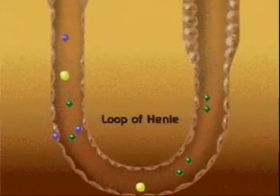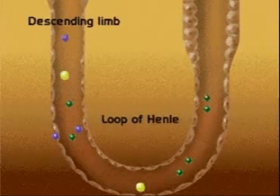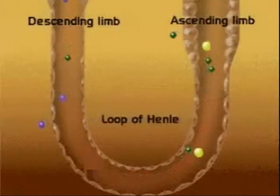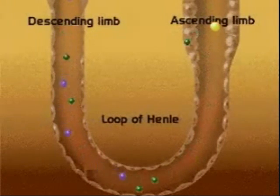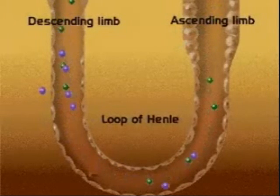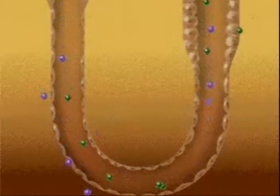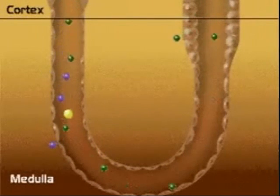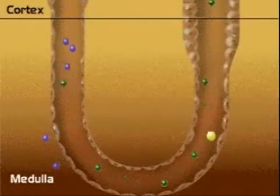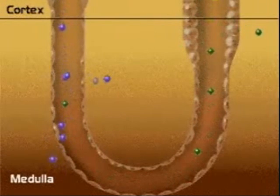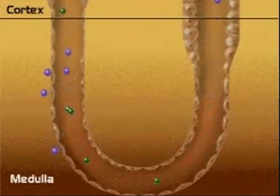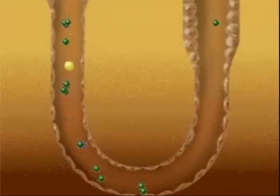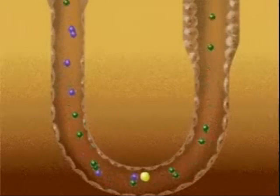The direction of flow in the descending limb of the loop is opposite from the direction of flow in the ascending limb. By flowing in opposite directions in such close proximity, a unique interaction occurs. The loop of Henle dips from the cortex of the kidney into the medulla and is surrounded by the medullary interstitial fluid. The counter-current multiplication system is responsible for not only elevating the concentration of urine in the loop, but more importantly, it elevates the concentration of the interstitial fluid as well.